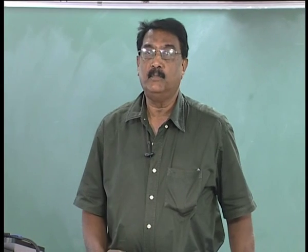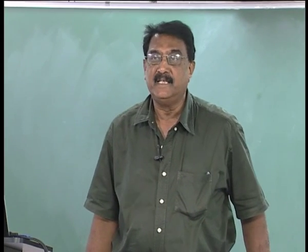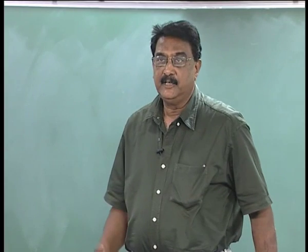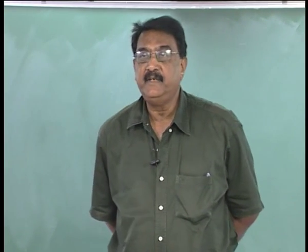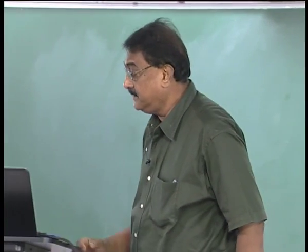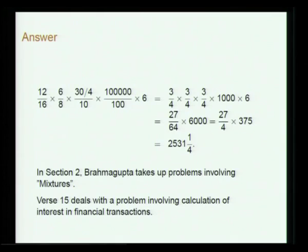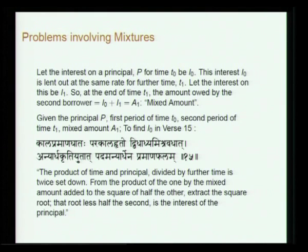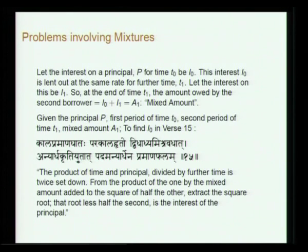Next, in section 2, Brahmagupta takes problems involving mixtures. For instance, verse 15 gives a problem involving calculation of interest in financial transactions — interest is also mentioned in Aryabhatiya. The following is discussed: let the interest on principal p for time t₀ be i₀. This interest i₀ is lent out at the same rate for further time t₁. Let the interest on this be i₁.